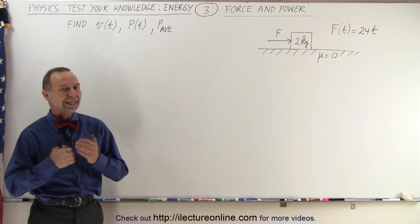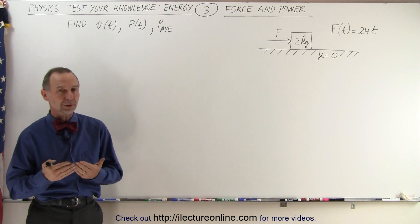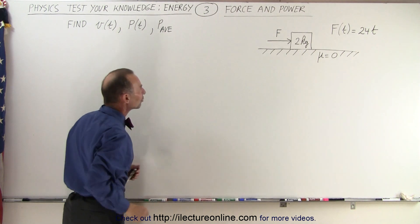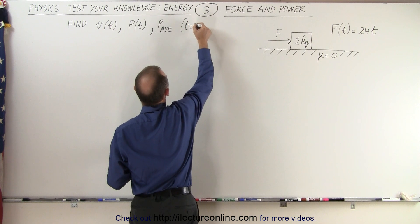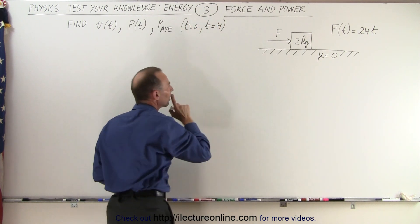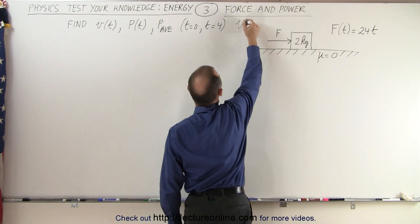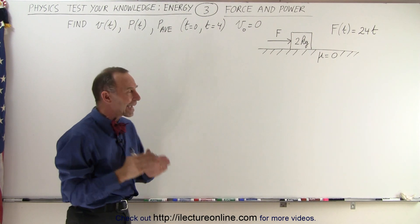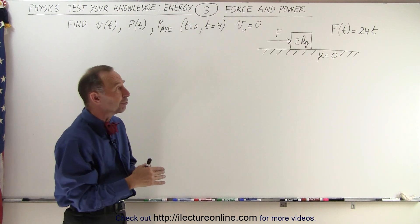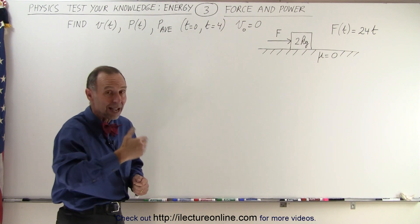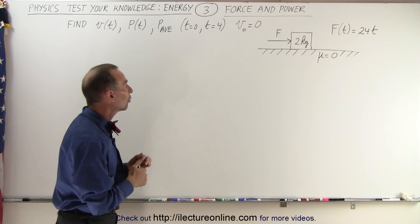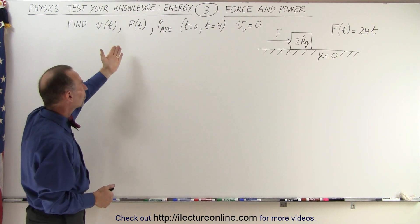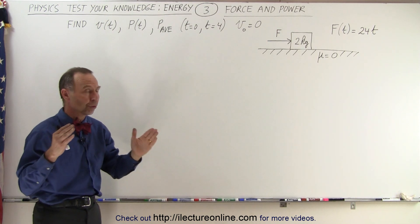Welcome to our lecture online. Our next example deals with force and power, and ultimately they want us to find the velocity as a function of time, the power as a function of time, and the average power for the time period from time equals zero to time equals four seconds. The initial velocity V-initial is equal to zero. We have an object with a mass of two kilograms and a variable force acting on it equal to 24 times t, so as time increases, the force increases.